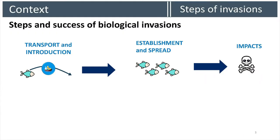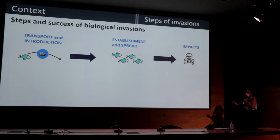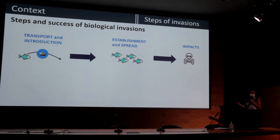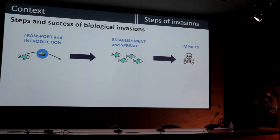But what is exactly an invasive species? An invasive species is a species which has been transported and introduced by the human pathway beyond its natural geographic ranges. Then the species has to establish in the new environment, which means reproduce and spread. And then the species has impacts.